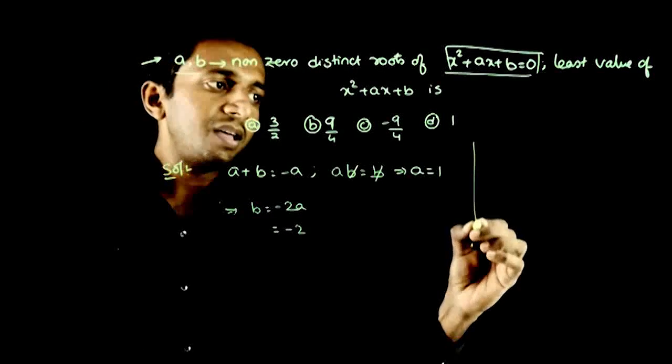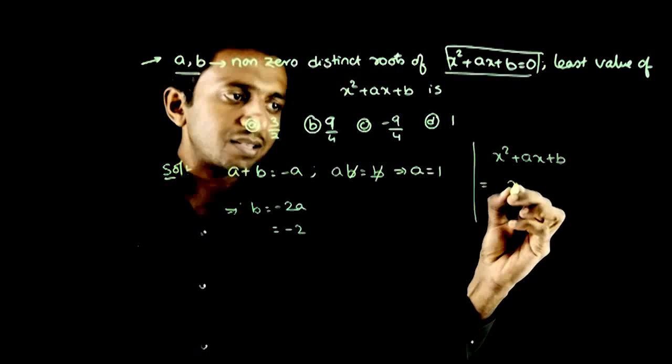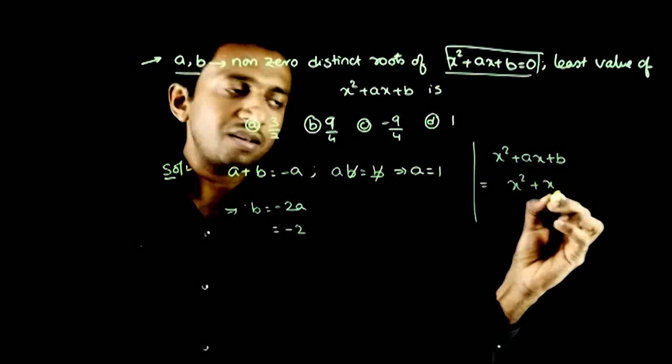So what is the expression x² + ax + b? Substituting our values, this becomes x² + x - 2.